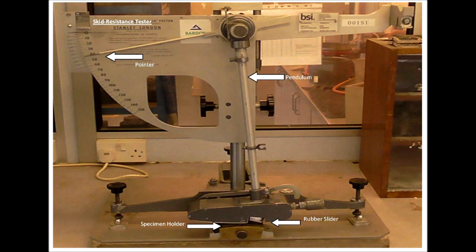The tester is set up in a way so that when the pendulum arm is released, the slider will transverse the specimen over a contact distance of 76 plus or minus one millimetre, after which the skid resistance of the specimen can be read from the pointer's position on the outer scale.